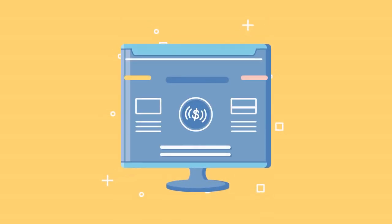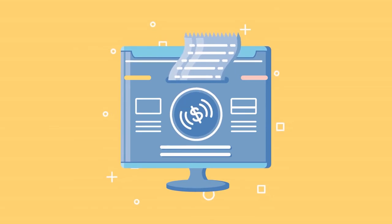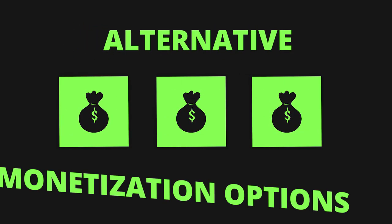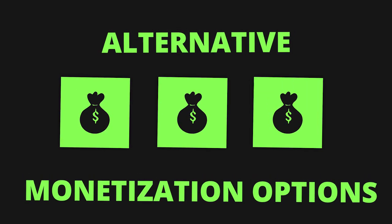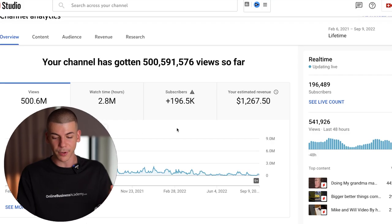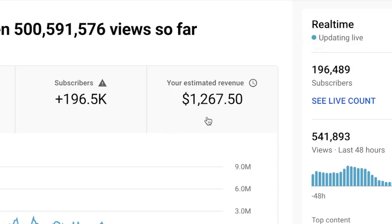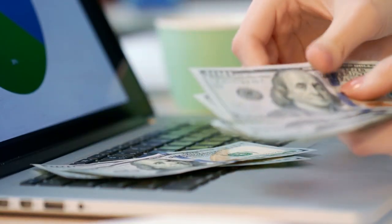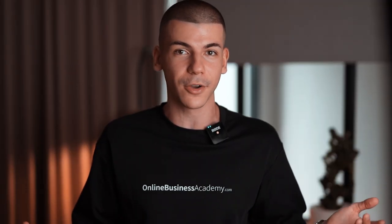I want to share a method we've never talked about before, and we're also going to talk about some alternative methods to make money from these YouTube Shorts, because if you just rely on ad revenue or the YouTube Shorts fund, you're probably not going to make that much money. This channel got 500 million views but only made $1,000 from ads — only $1,000 from the YouTube Shorts fund — which obviously isn't a lot, but we made a lot more money on the back end through different monetization options.